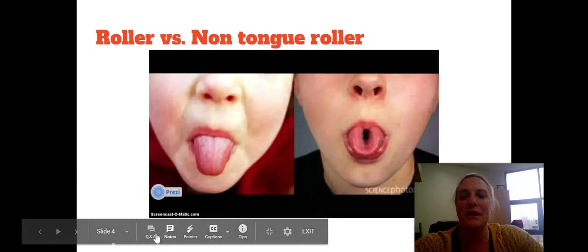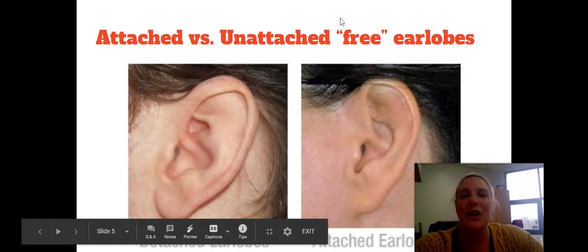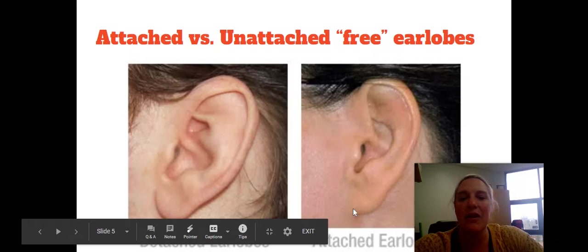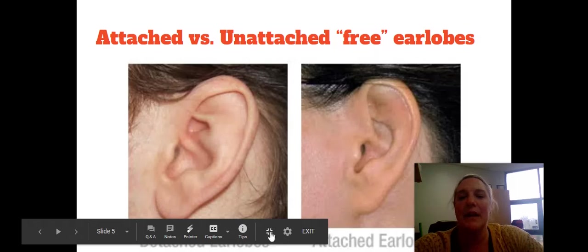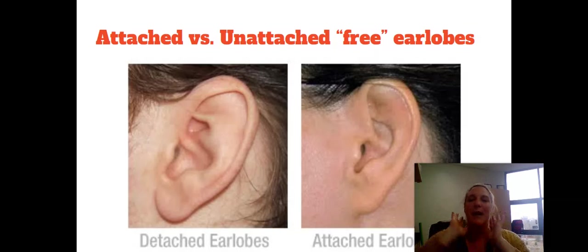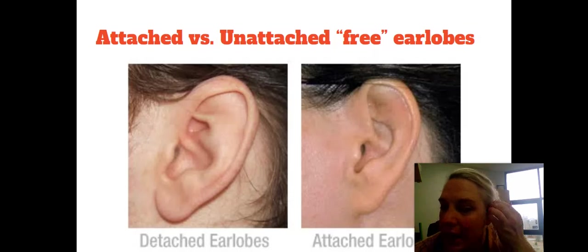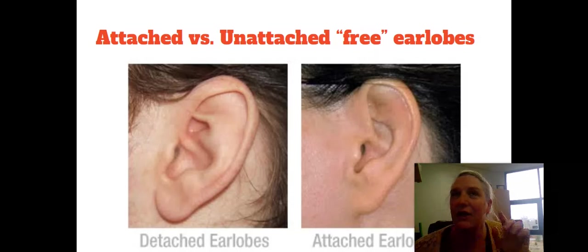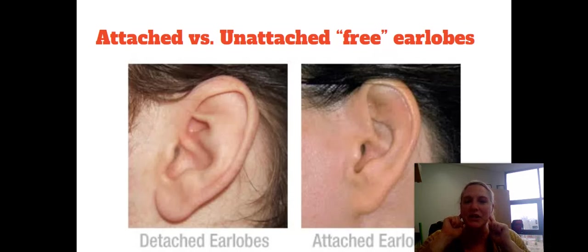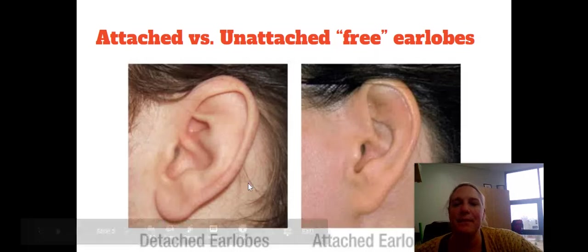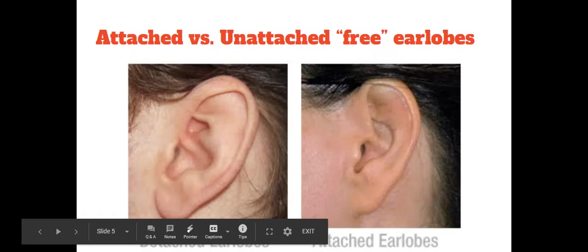The next one is your earlobes — are they attached or unattached? You are looking at the point at which your lobe attaches to your face. You can see in one picture there's no real free-hanging lobe, it's just straight attached to the face, versus the other picture where there's some space showing the earlobe has some free hang. Look at your earlobes, or have someone help you look, and determine if they are attached or unattached. Mine are unattached, but I don't have very big earlobes — you can have different varying degrees of earlobe size. Then go to your sheet and write attached or unattached.